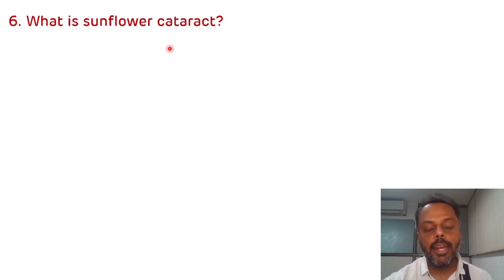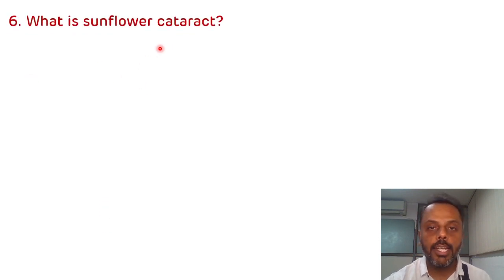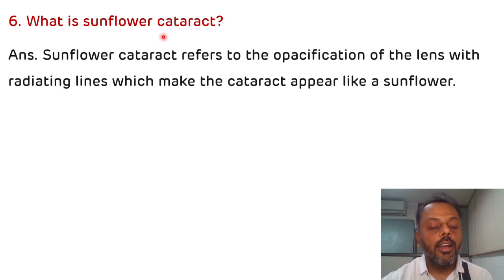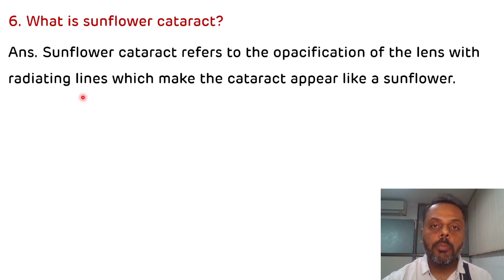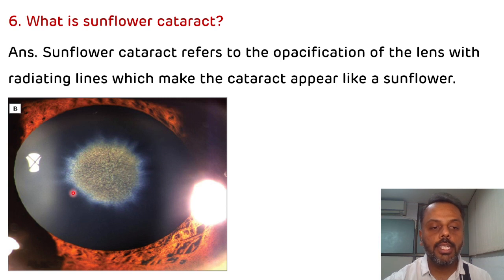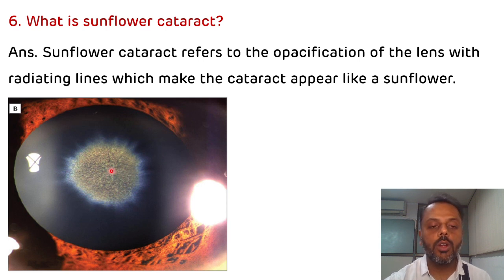What is sunflower cataract? The sunflower cataract is again a characteristic finding in Wilson's disease. There is opacification of the lens with radiating lines, which makes the cataract appear like a sunflower — that's why it is known as sunflower cataract. You can see the radiating lines in the lens with opacification of those lines.